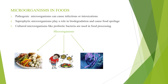Microorganisms play one of these three roles in relation to food. First, pathogenic microorganisms can cause infections or intoxication. Second, saprophytic microorganisms play a role in biodegradation and cause food spoilage. Third, cultured microorganisms like probiotic bacteria are used in food processing. These three figures show the role of microorganisms in relation to food.